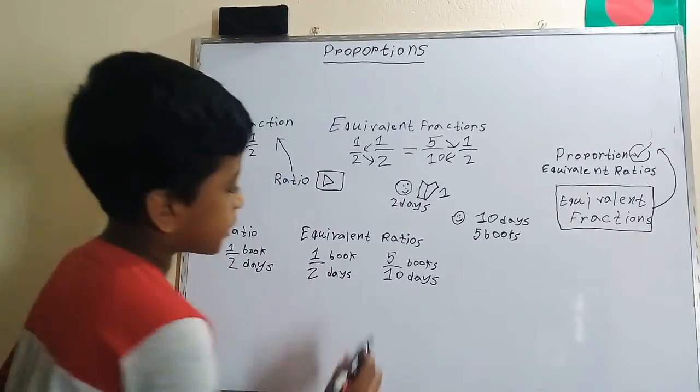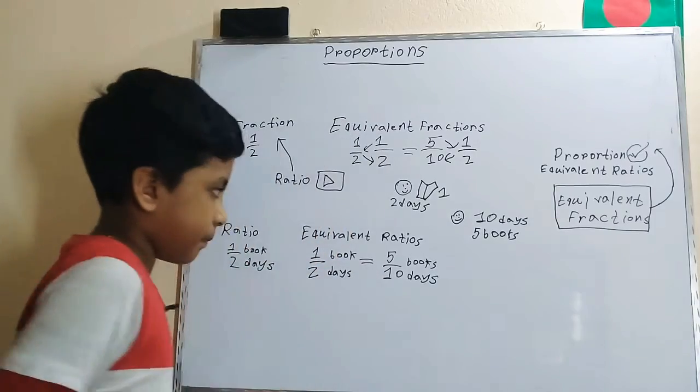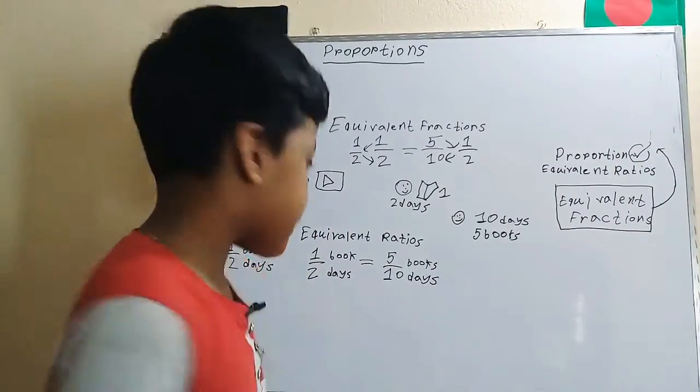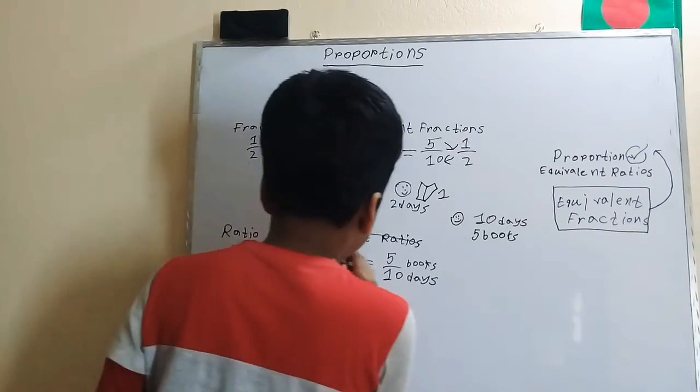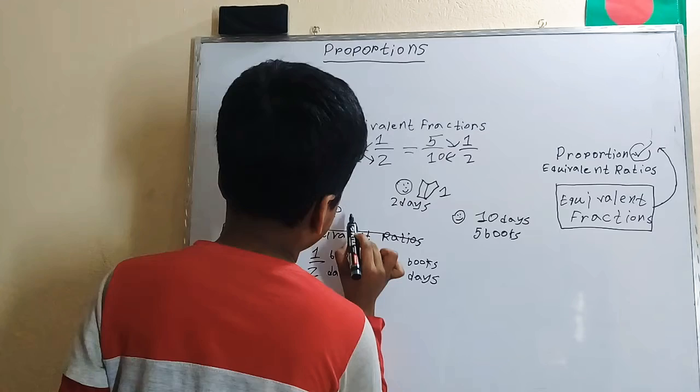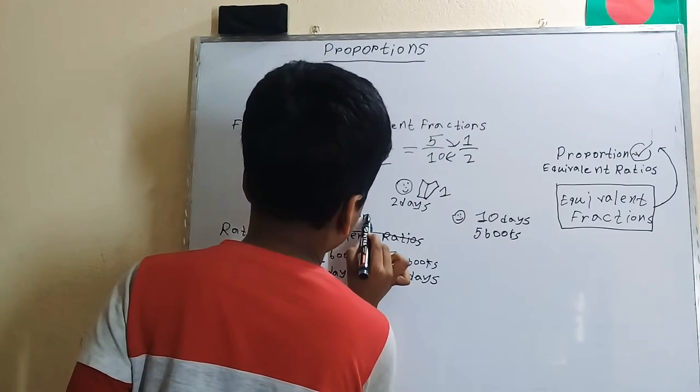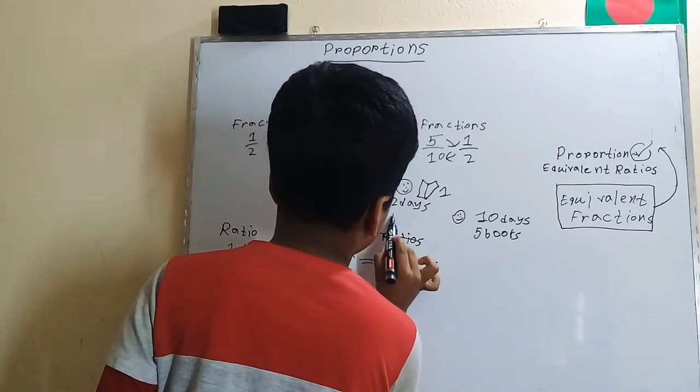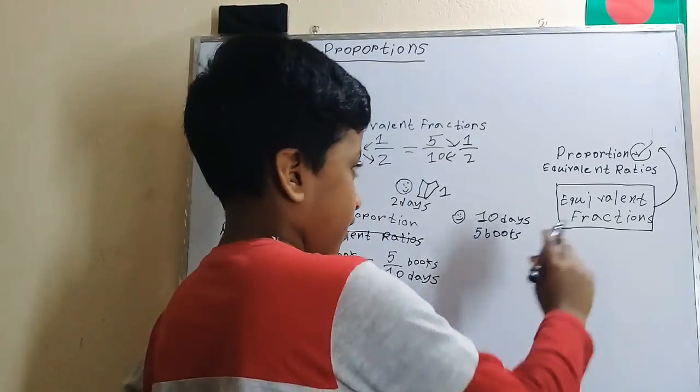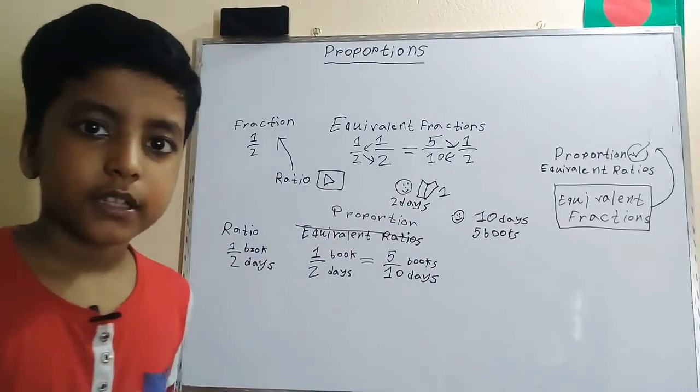So the ratio from books to days now is 5 over 10, five books over ten days. So now these are equivalent ratios, so we can put them together. And when we do that, it's called a proportion.